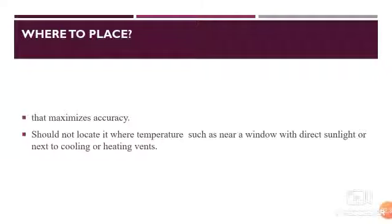We should ensure our analytical balance does not have direct exposure to a window. It should not be located near a window where there is direct sunlight, or next to cooling or heating vents. If you have a window, obviously there will be sunlight, and because of that there will be fluctuations in temperature. For example, if you want to measure a powder, if there is more humidity, air flow, or other disturbances, your measurements will not be accurate. We should keep the balance in a place where sunlight, air flow, and dust particles cannot enter.